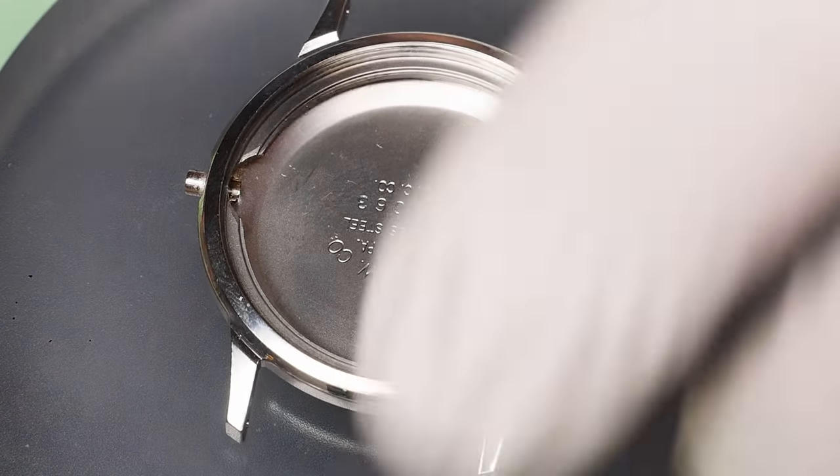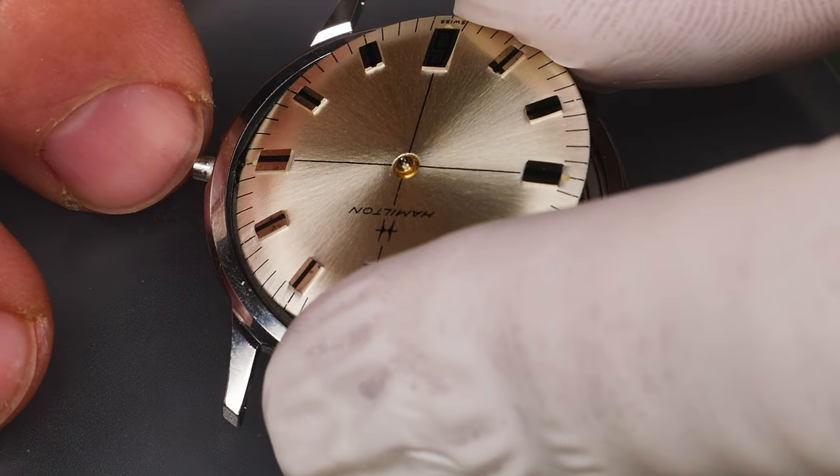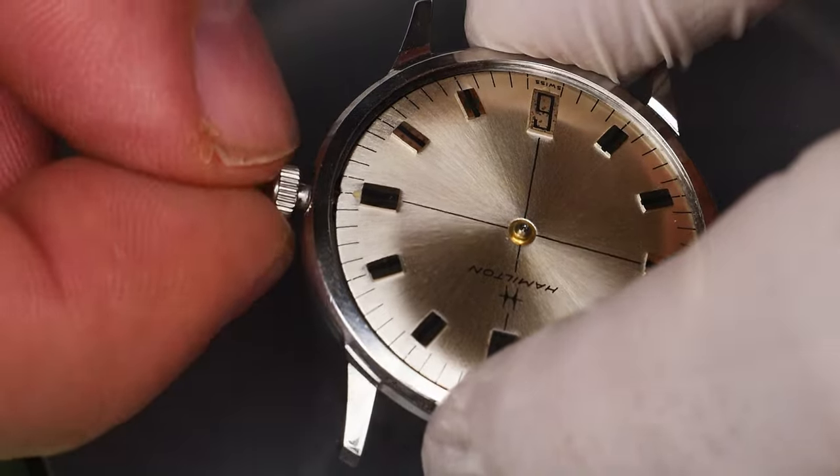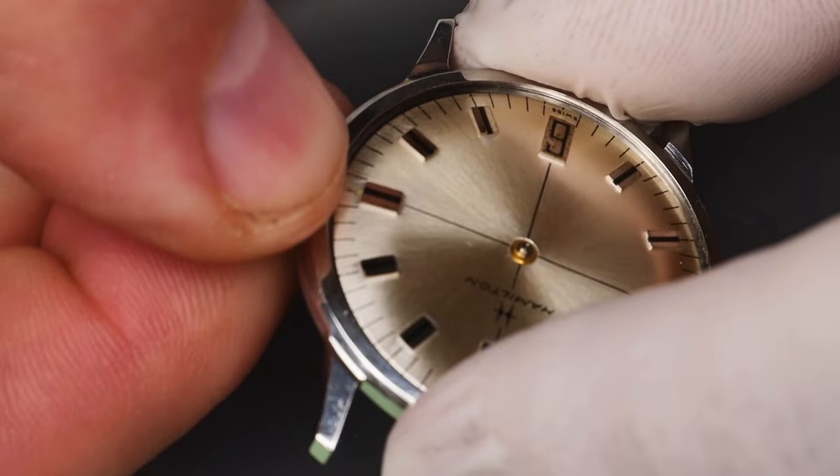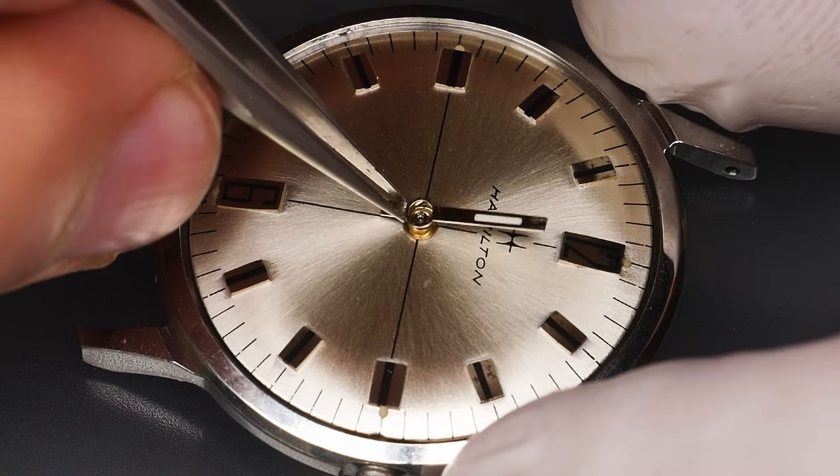Let's get this baby cased up. You can see why a monocoque case must have a split stem here. I'll slide the female half of the stem through the case tube, which also aligns the dial to the case. Then I can line up the male half of the stem and press it home.